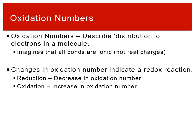That's where oxidation numbers come in. Oxidation numbers describe the distribution of electrons in a molecule by imagining all bonds are ionic — you're generating 'fake' charges to track where electrons spend their time. Changes in oxidation numbers indicate a redox reaction. Reduction is a decrease in oxidation number; oxidation is an increase in oxidation number.